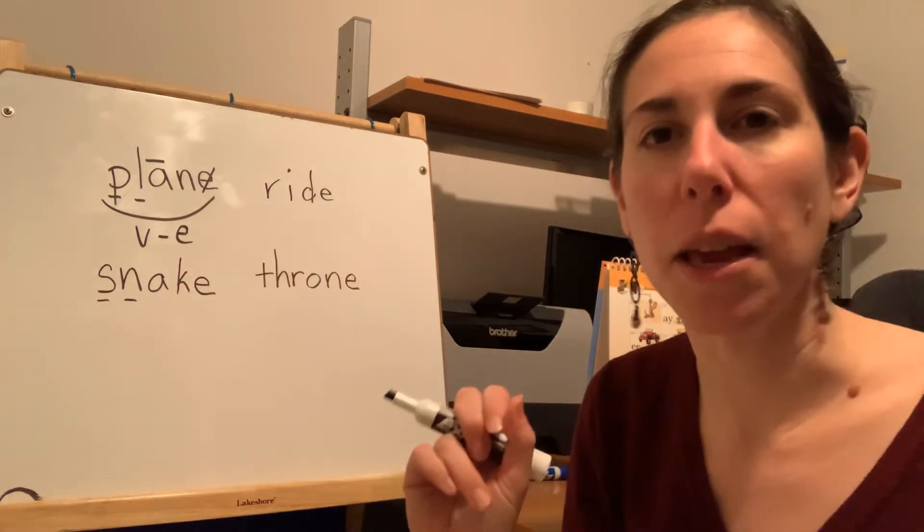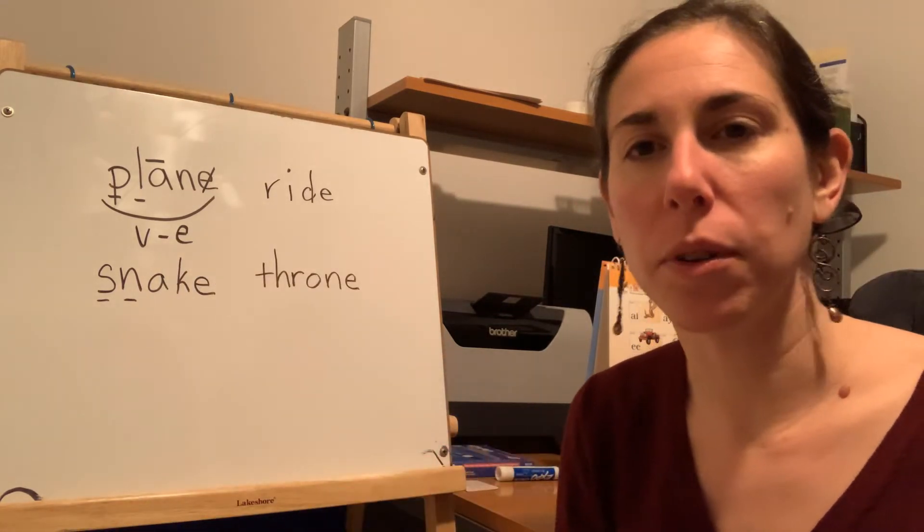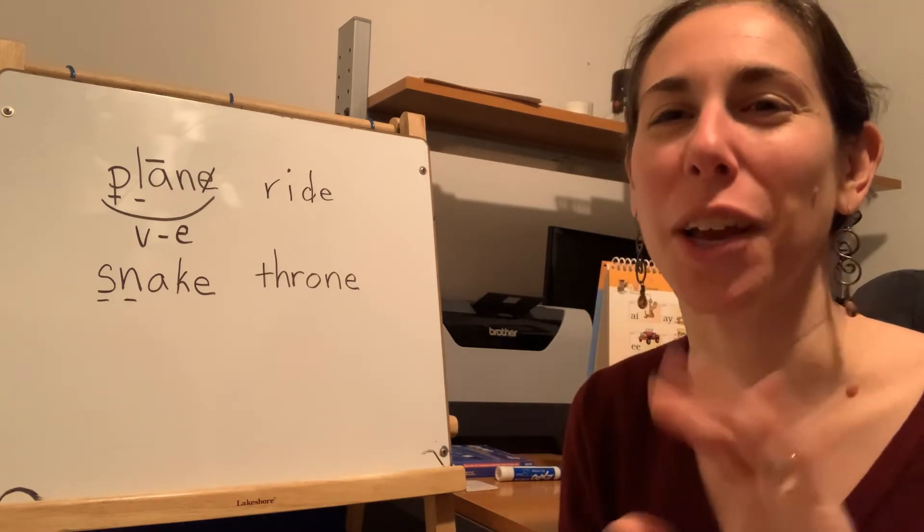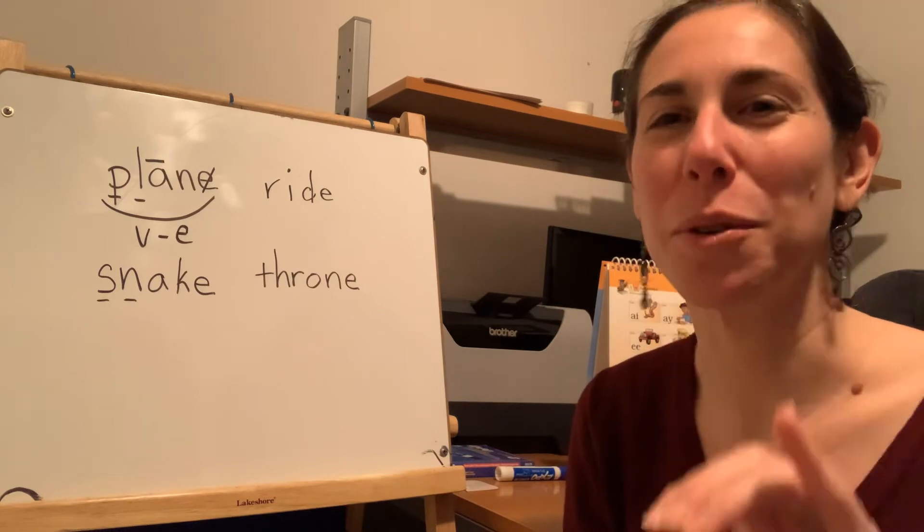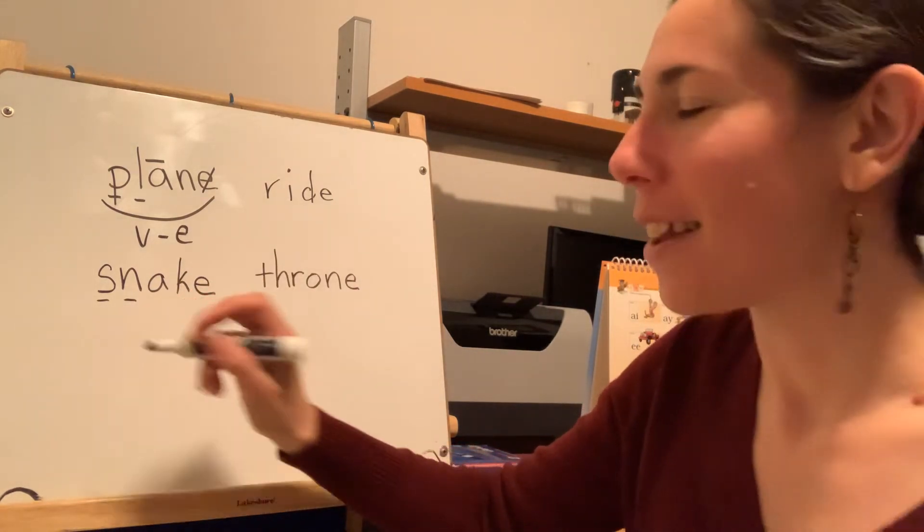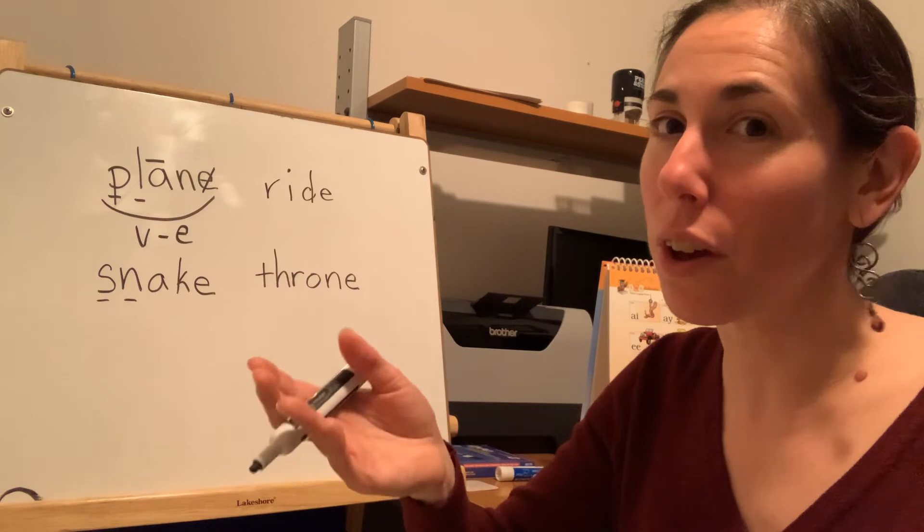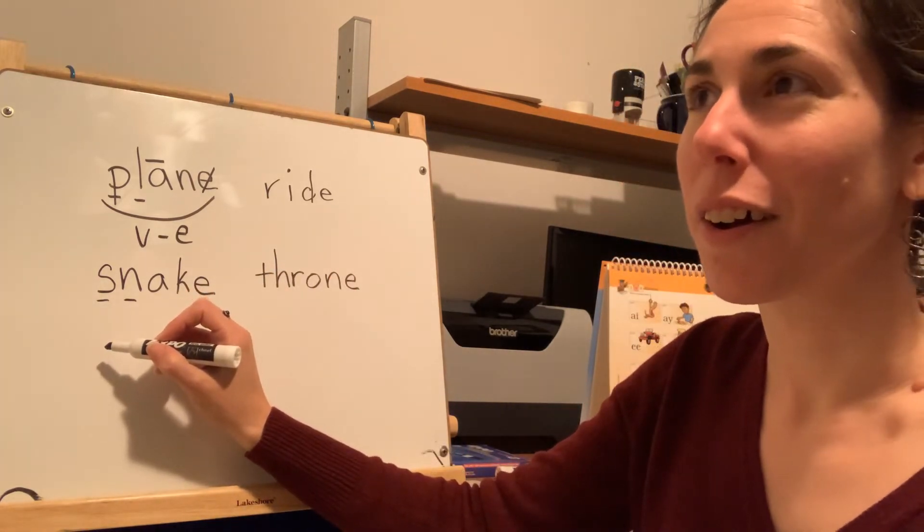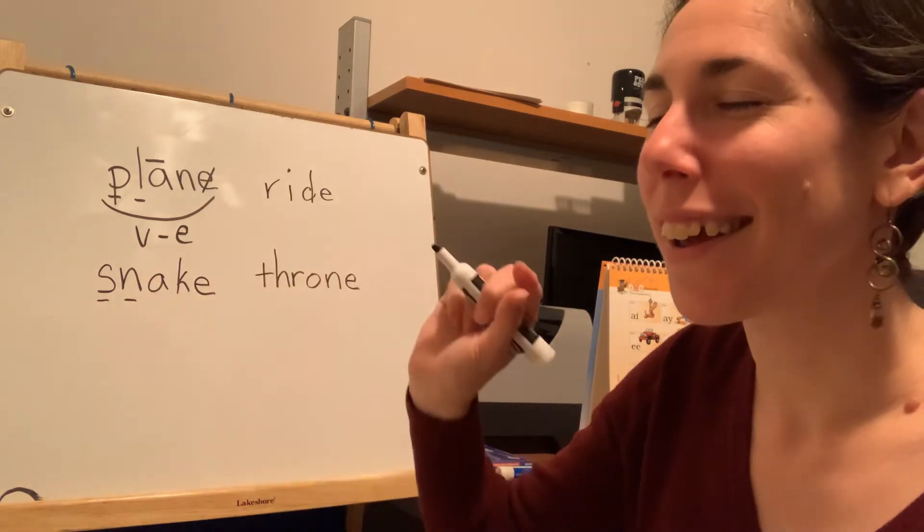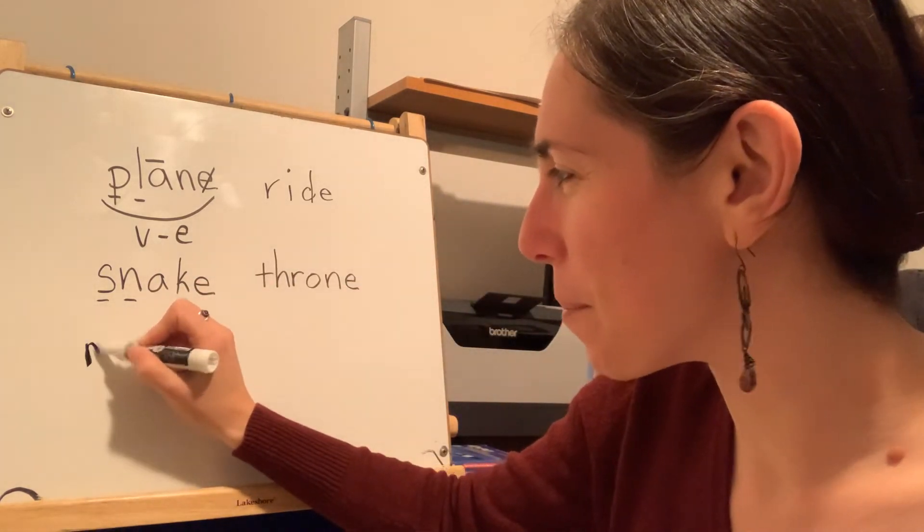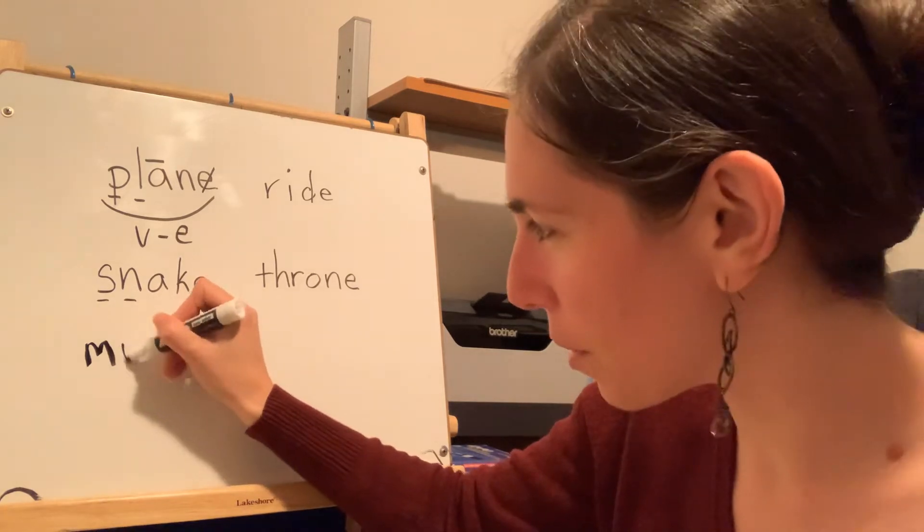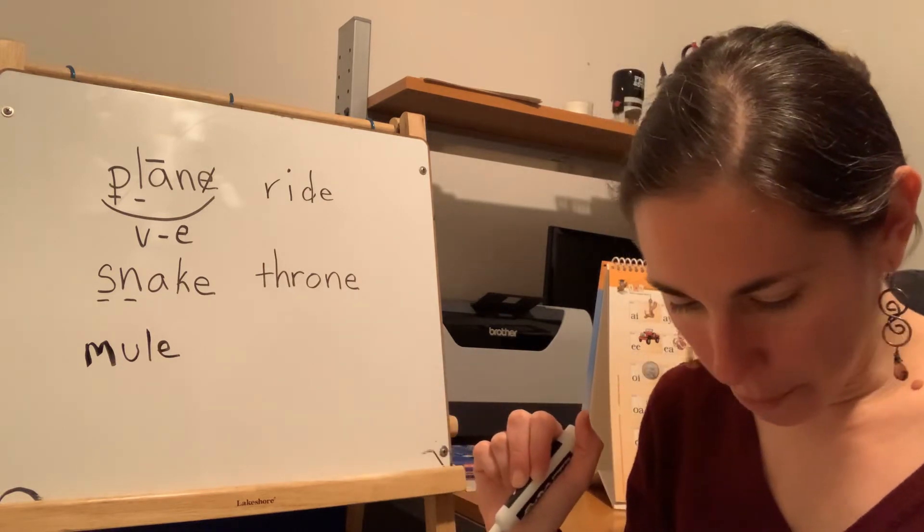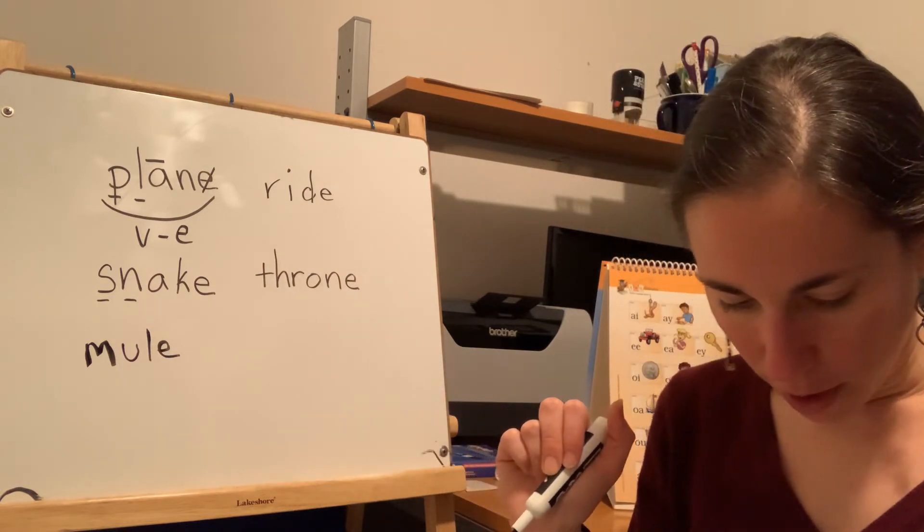And mule. Say mule. Tap mule. M-U-L. Mule. It's a little tricky. Mule has that U sound. Now there's only one vowel that says U, and that's U. U says U. Mule. And that's it for that.